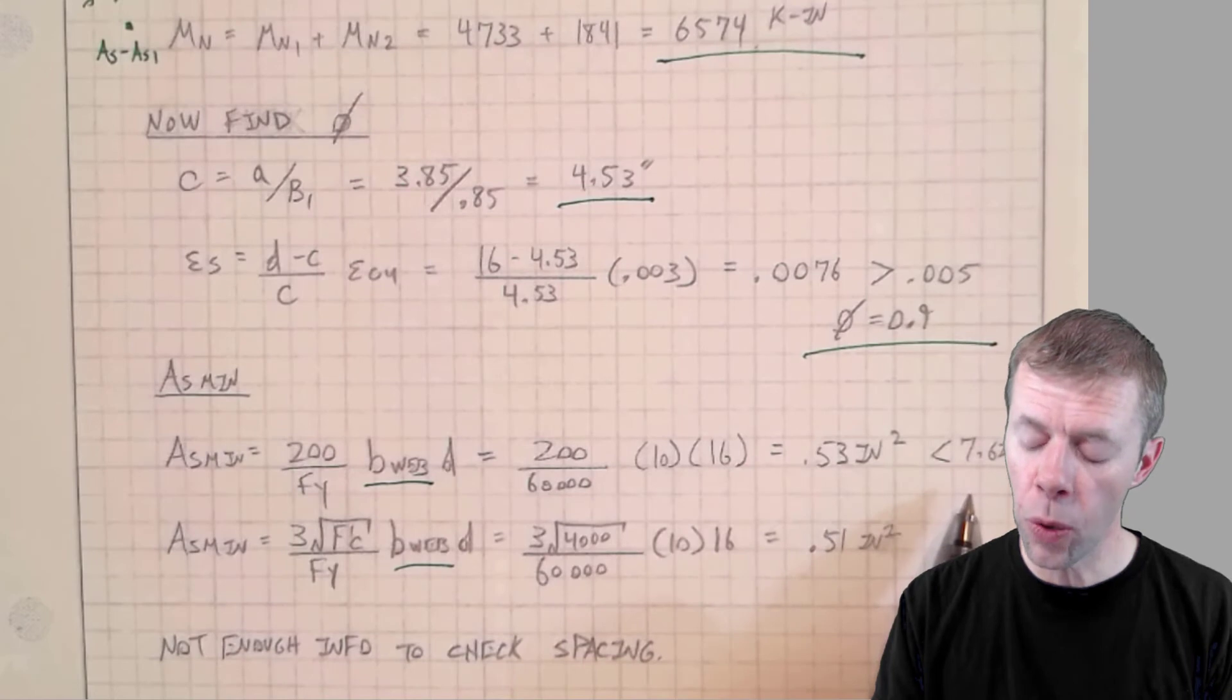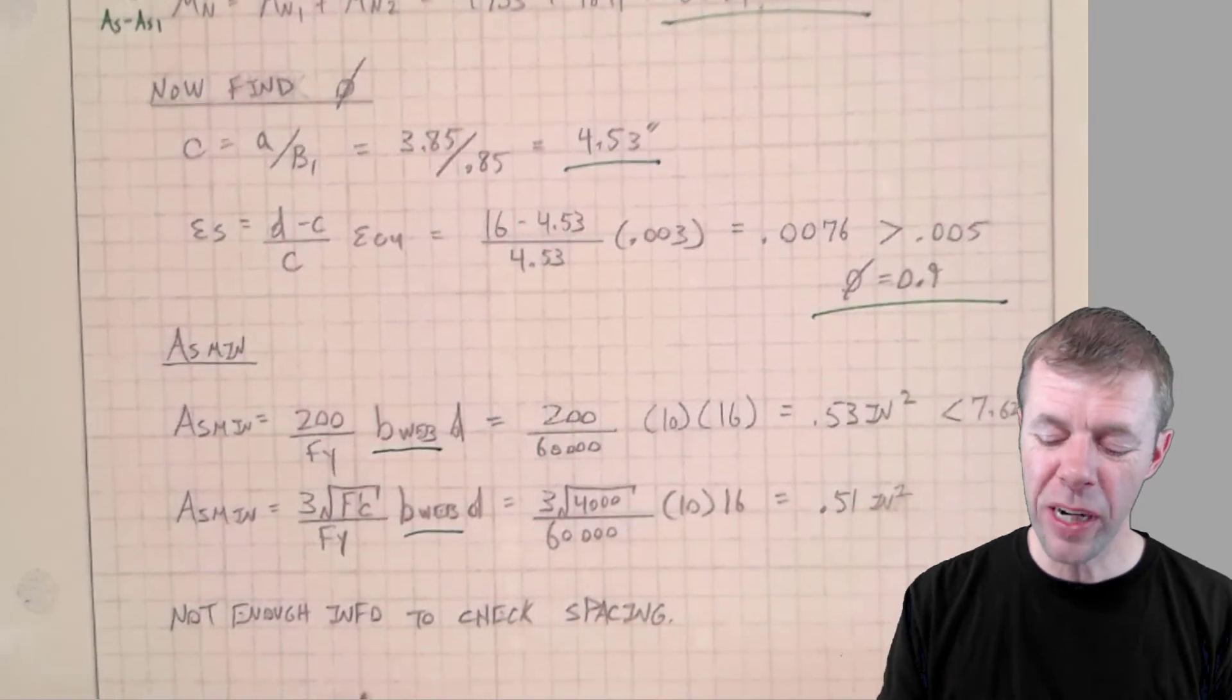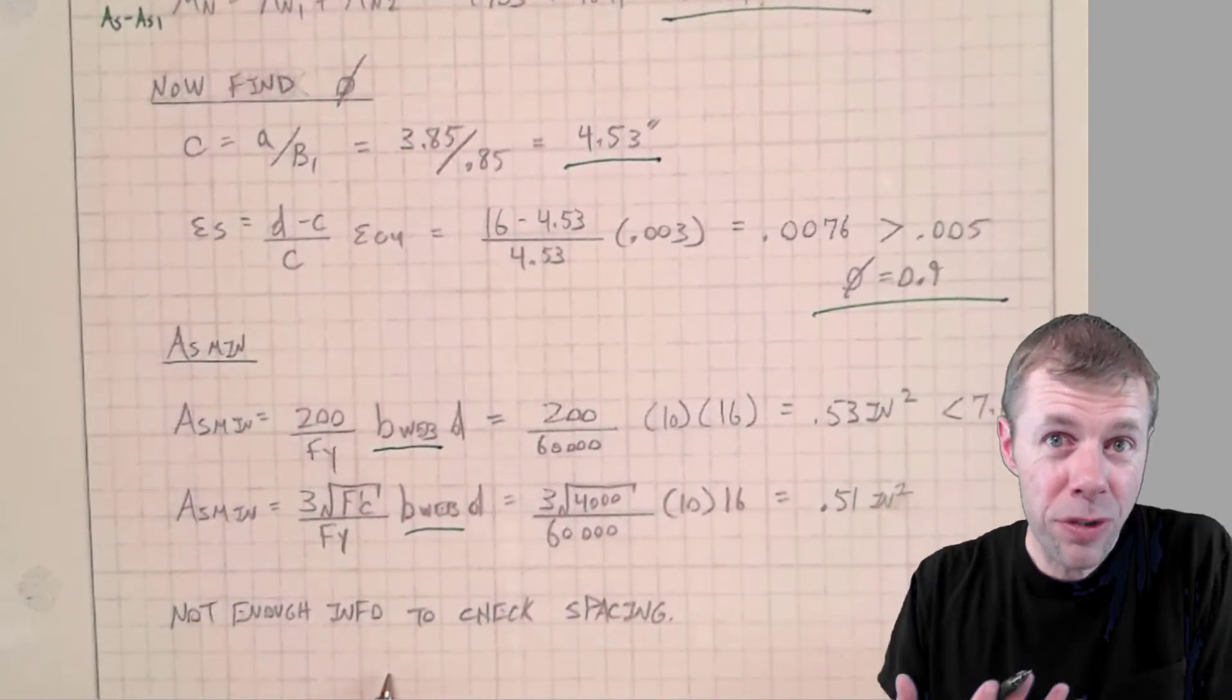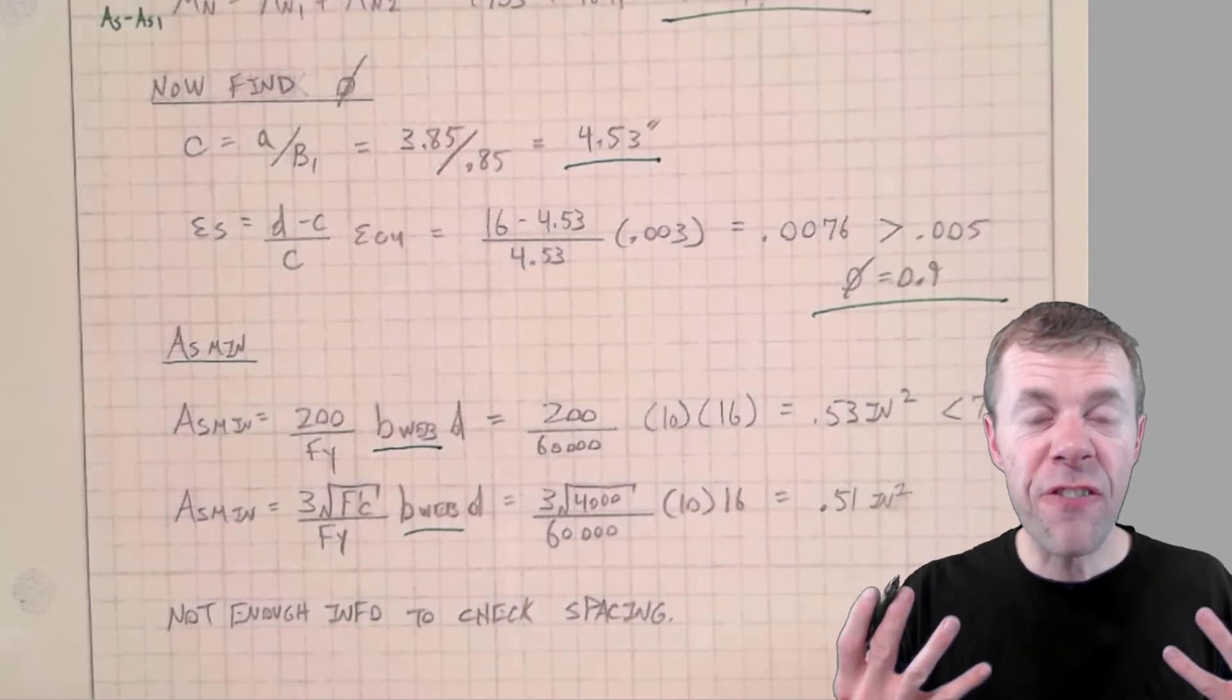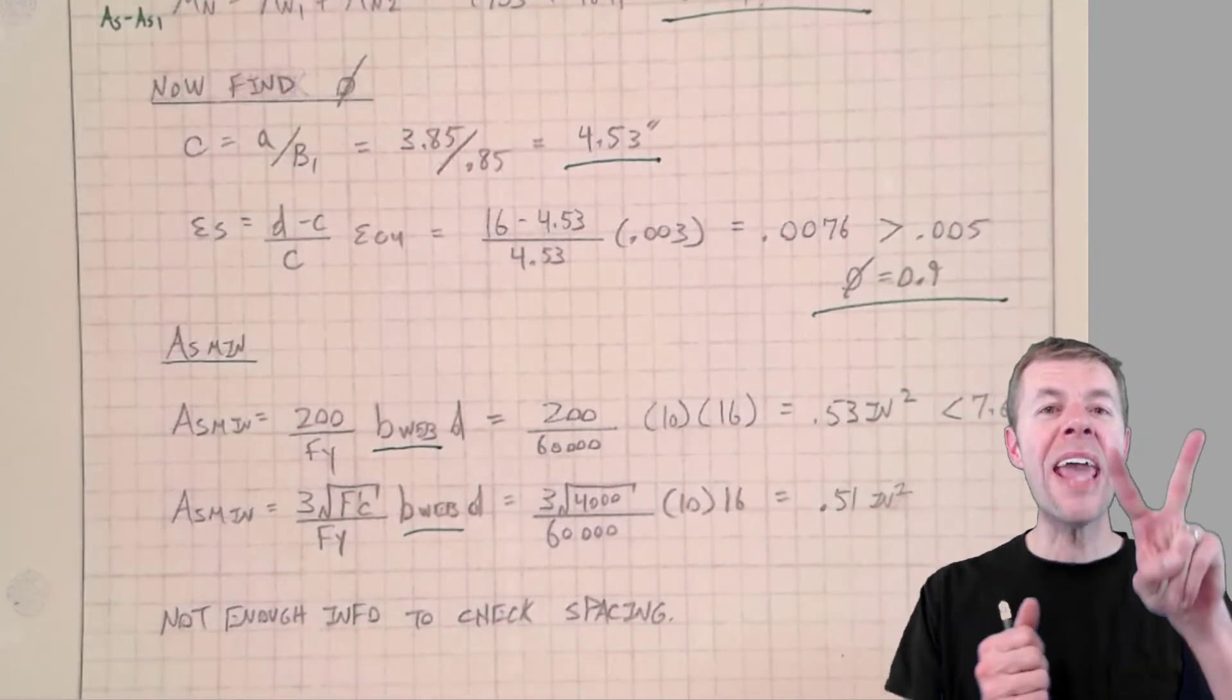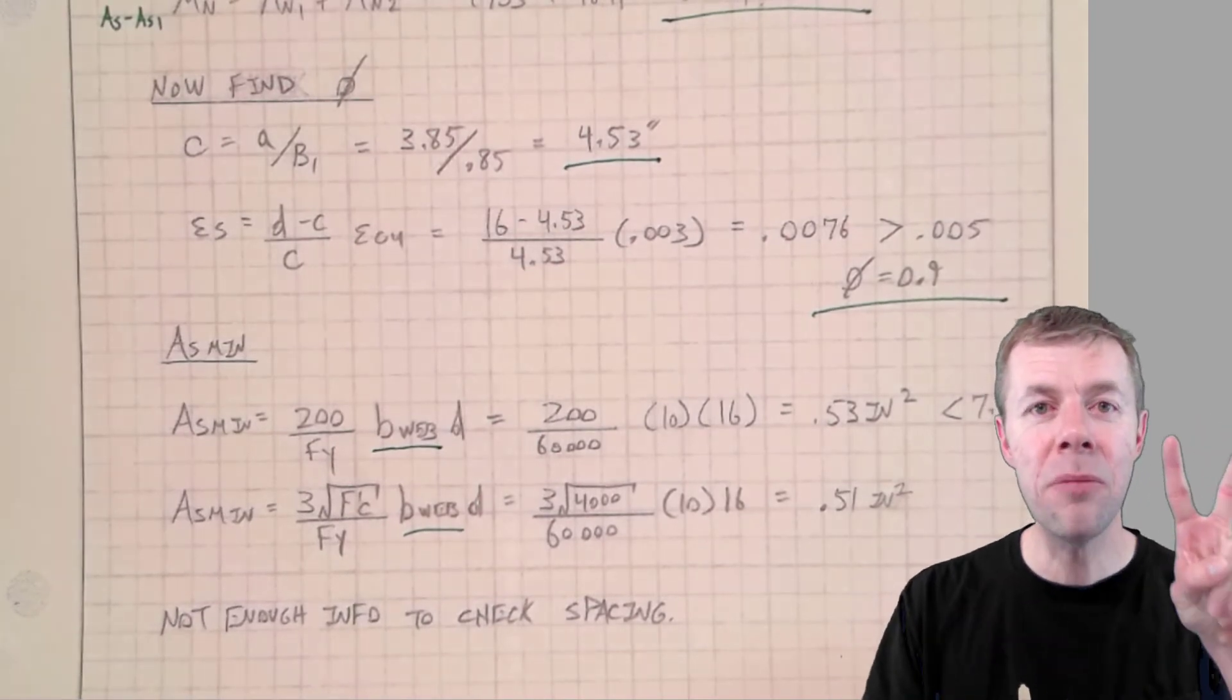And it doesn't control. It's nowhere near. And we don't have enough information to check our spacing. So we're just going to assume it's okay. And that's it for T-beam analysis. That was a case two T-beam analysis.